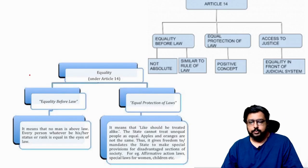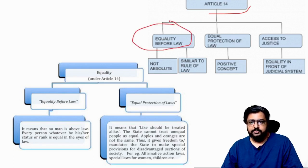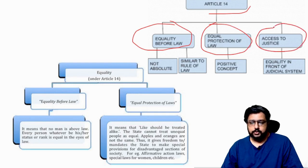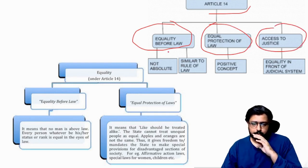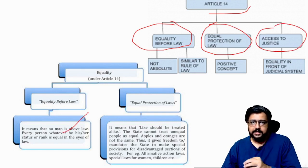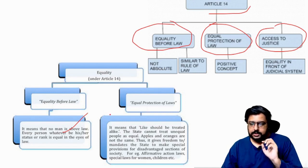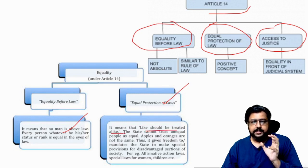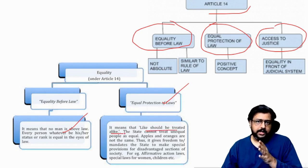Before going to the textbook, Article 14 basic definitions: it can be split into equality before law, equal protection of law, and access to justice. Equality before law means no man is above the law — from the president to a very basic common man, everybody is the same in front of the law. Equal protection of laws means 'like should be treated alike.'